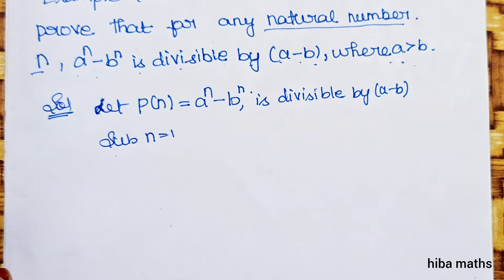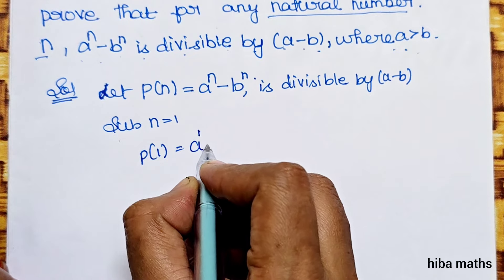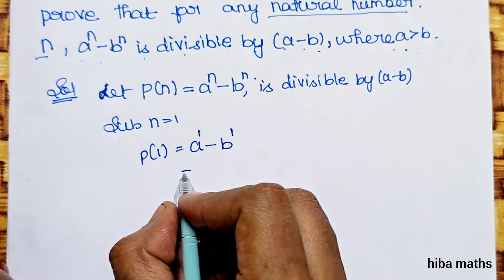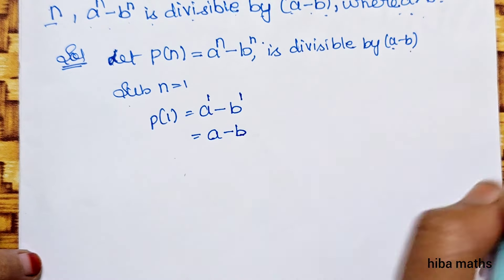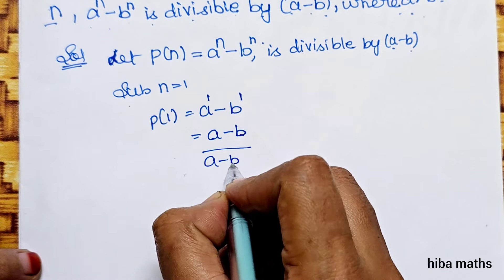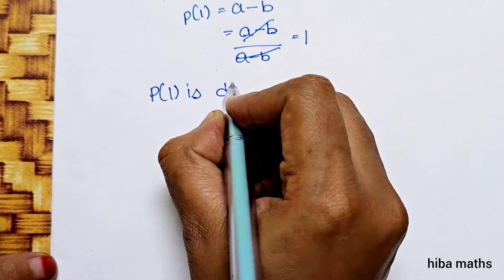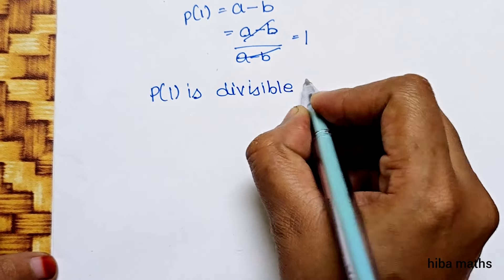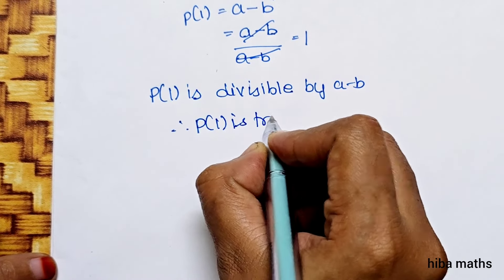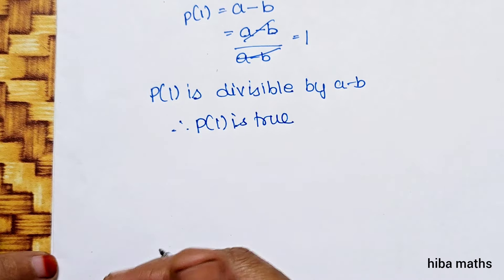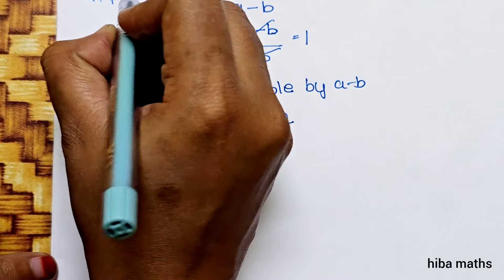Step 1: Substitute n equal to 1. So a power 1 minus b power 1 equals a minus b. Since a minus b is divisible by a minus b, therefore P(1) is true.